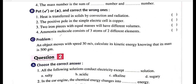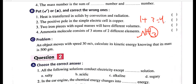Ammonia molecule NH₃ consists of how many atoms? One nitrogen and three hydrogen — so 1 + 3 = 4 atoms in total, made of two different elements.